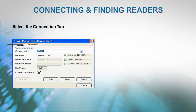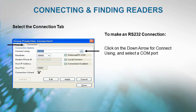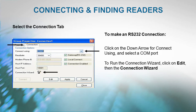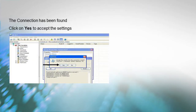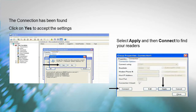Select the Connection tab. To make an RS-232 connection, click on the down arrow for Connect Using and select a COM port. To run the Connection Wizard, click on Edit, then the Connection Wizard. The Connection Wizard will find the connection and then set up the proper COM port and baud rate settings in the software. The connection has been found. Click on Yes to accept the settings. Select Apply and then Connect to find your readers.